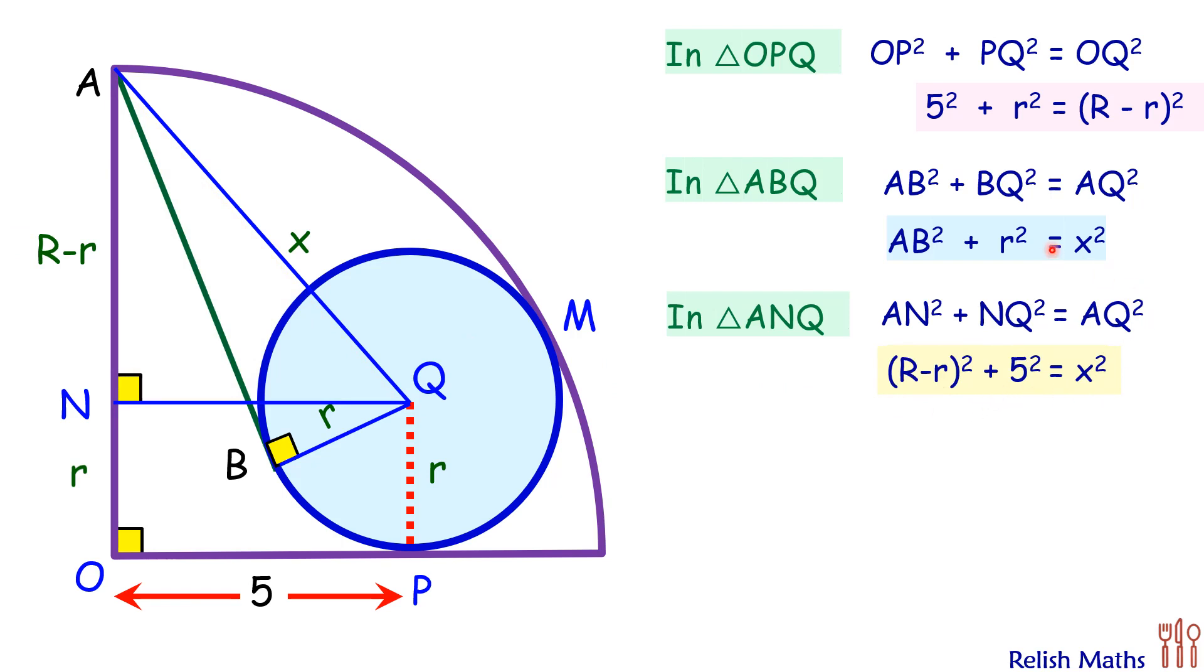Now this blue equation and yellow equation, LHS both are equal to X². So comparing this, we are getting AB² + r² = (R - r)² + 5². So we have just eliminated X². Now from this equation, we will subtract our first equation, that's this pink equation.